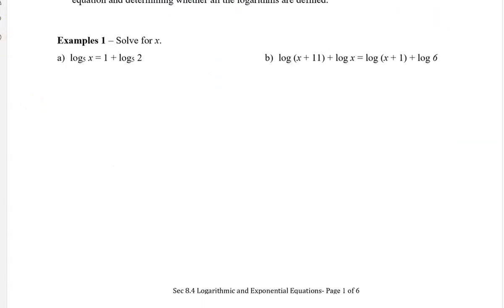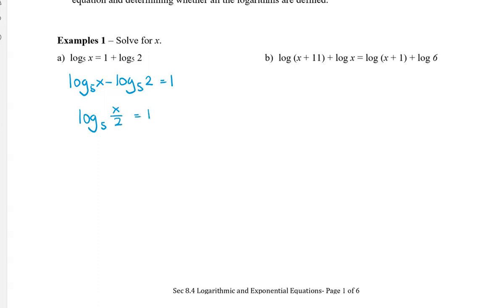Let's take a look at an example. In this first one, we have log x equals 1 plus log 2, both of base 5. What I'm going to do is move the logs to the left side. So I have log base 5 of x minus log base 5 of 2, and that equals 1. I'm going to use my log laws to combine the left side into a single log. We already have no coefficients, so that's good.